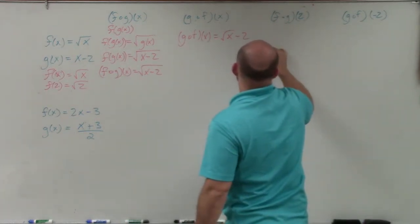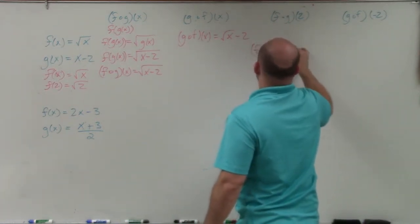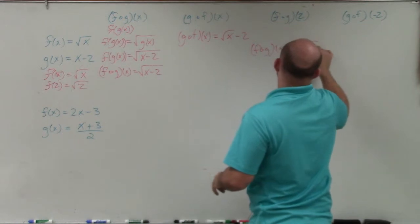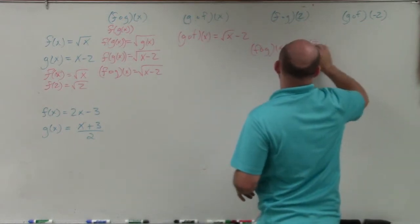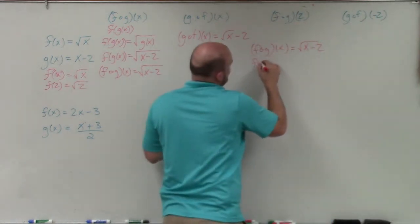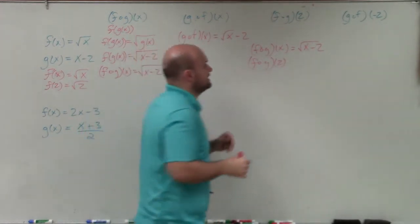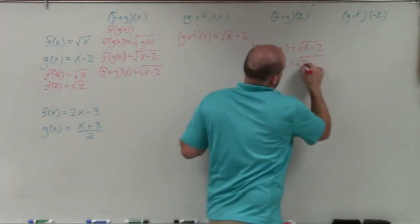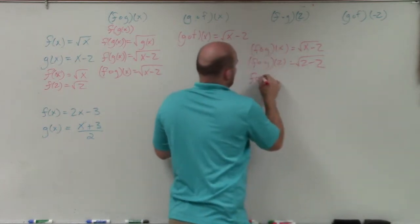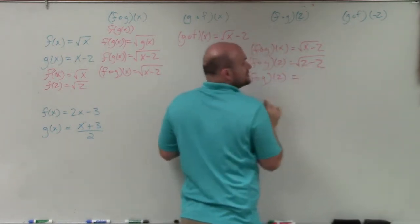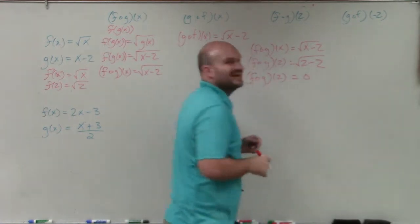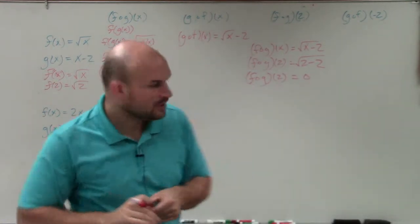Well, we know that f of g of x, that was equal to the square root of 2 minus—I'm sorry, of x minus 2. So if I want to do f of g of 2, I'm just going to plug the 2 in for the x. So therefore, f of g of 2 equals 2 minus 2 is 0, square root of 0 is 0.